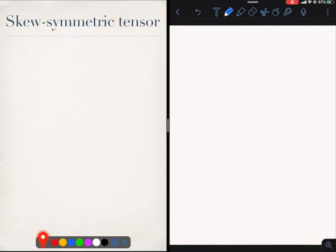Moving on to the second tensor which will be of importance in dynamics. This is a skew-symmetric tensor, which is defined to be simply a tensor which is the negative of its transpose. Such a tensor is also called an anti-symmetric tensor. I will stick with the nomenclature skew-symmetric tensor.